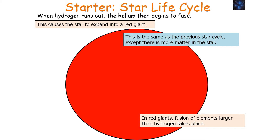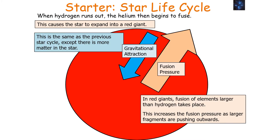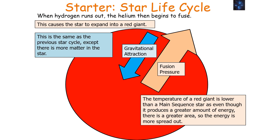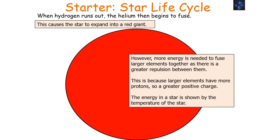In the red giant, fusion of elements larger than hydrogen takes place. Because the fusion pressure outwards is larger — as there are larger fragments pushing outwards — this causes the star to increase in size and become a red giant. The temperature of a red giant is lower than the main sequence star, because even though it produces a greater amount of energy, there is a greater area so the energy is more spread out. More energy is needed to fuse larger elements together, as there's a greater repulsion between them, since larger elements have more protons and carry a greater positive charge.